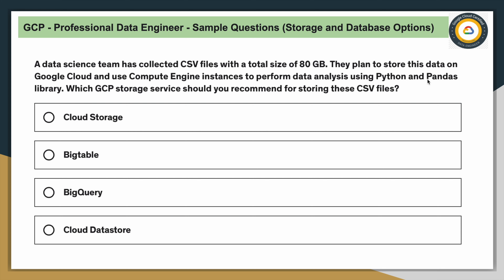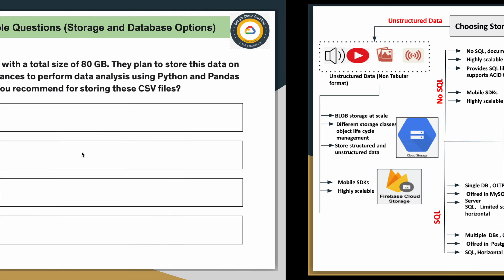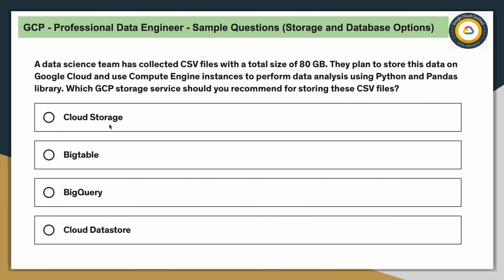Looking at the options: Cloud Storage — yes, you can store structured and unstructured data in Cloud Storage based on requirements, so this is one possible answer. BigTable is a NoSQL database designed for a minimum of around 100 terabytes of data. Since we only have 80 GB of CSV files, we can ignore BigTable in this case.